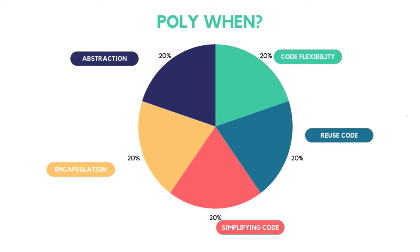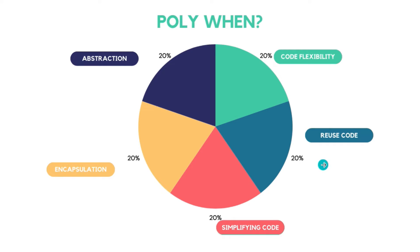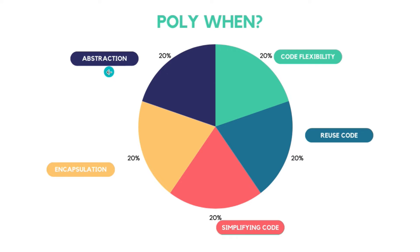So when do we use polymorphism? If you can meet two or three of these criteria, you're golden. Polymorphism helps with encapsulation, simplifying your code, reusing your code, code flexibility, and abstraction, which is the fourth pillar. So if you can see that you're going to need two or more of these, try and take a polymorphic approach.